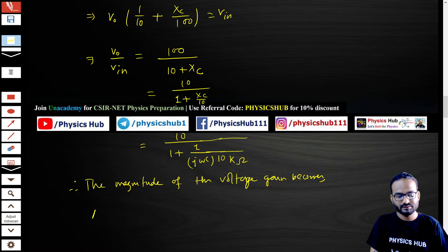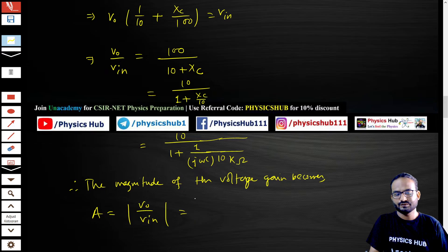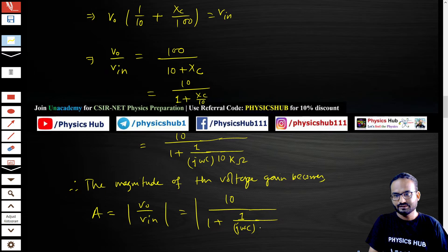Therefore, the magnitude of the voltage gain A equals the modulus of V_0 by V_in: the modulus of 10 by 1 plus 1 by j omega C times 10 kilo ohm, so 10 to the power 3 ohms.